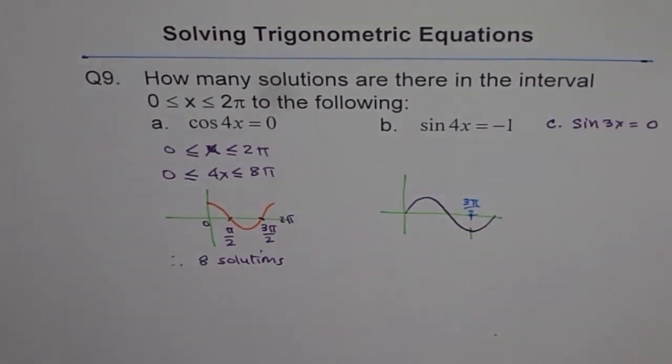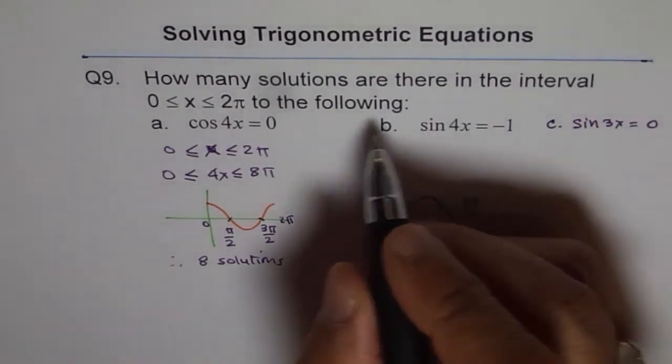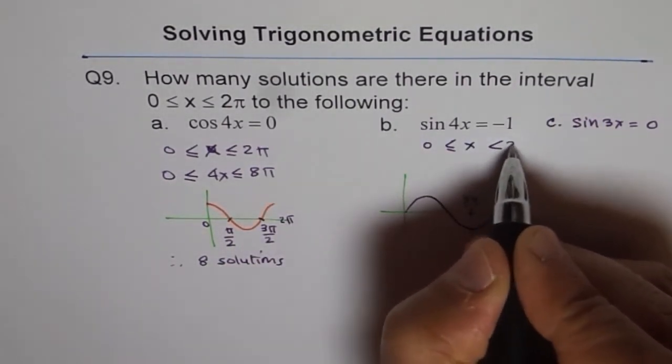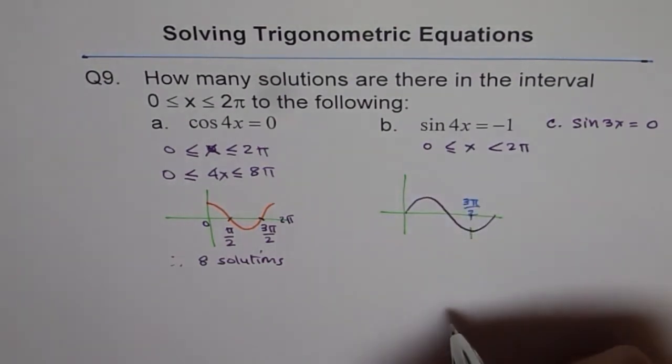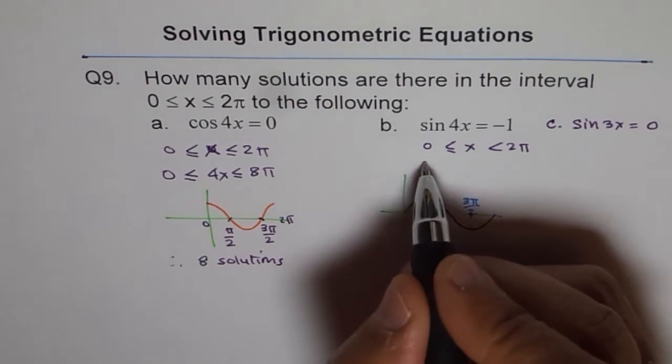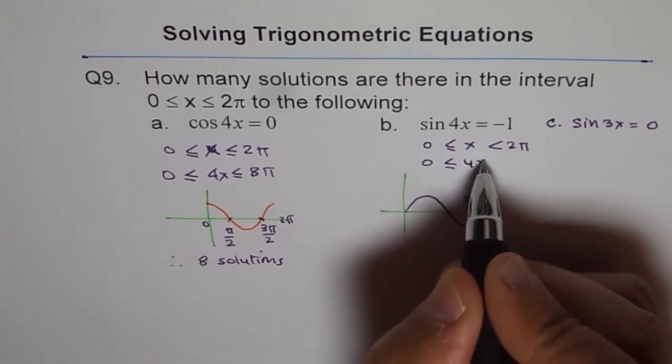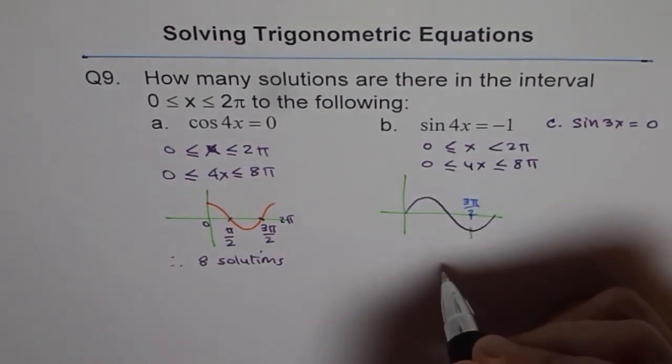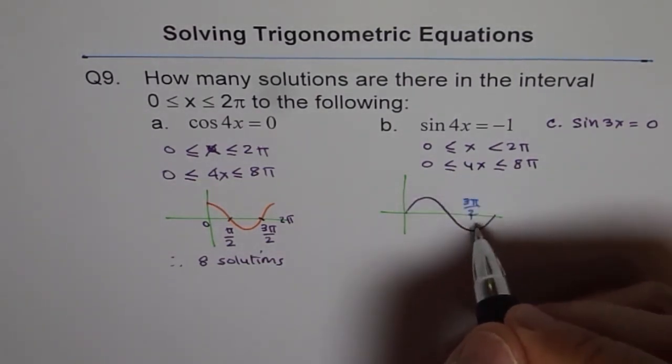So with a domain of 0 to 2π, if we consider the domain of x between 0 to 2π, then it has only one solution, but it is sin 4x, not x. So we need to find what is the domain for 4x. Domain for 4x is 8π, 0 to 8π.